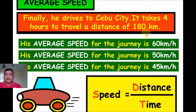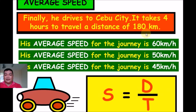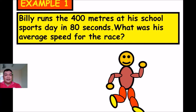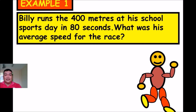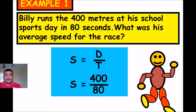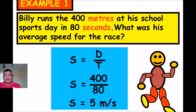To find average speed, divide the distance traveled by the time traveled: S = D ÷ T. Example 1: A runner runs 400 meters on sports day in 80 seconds. What was the average speed? Divide 400 ÷ 80 = 5 meters per second. The average speed is 5 meters per second.